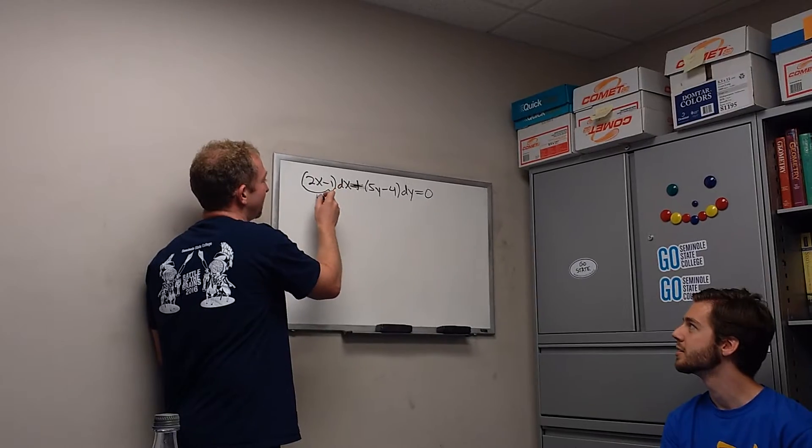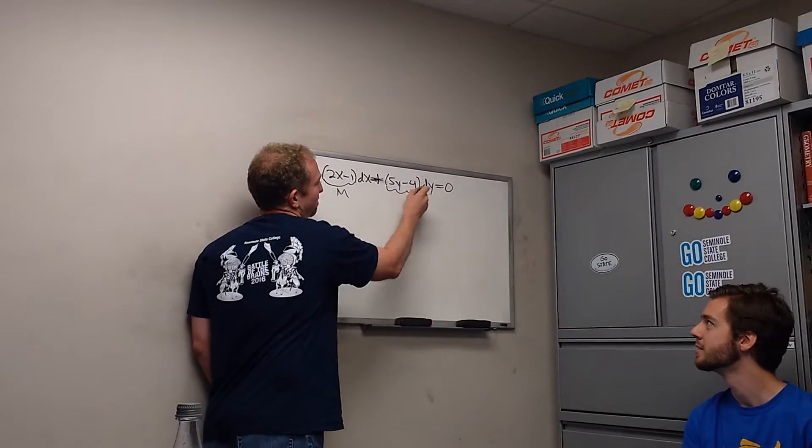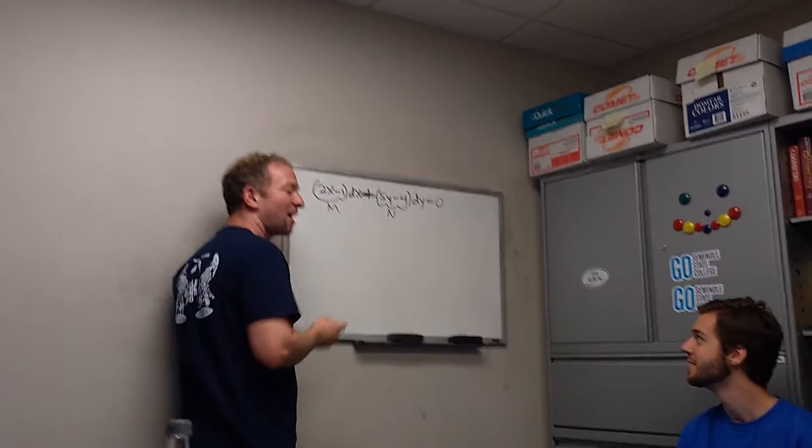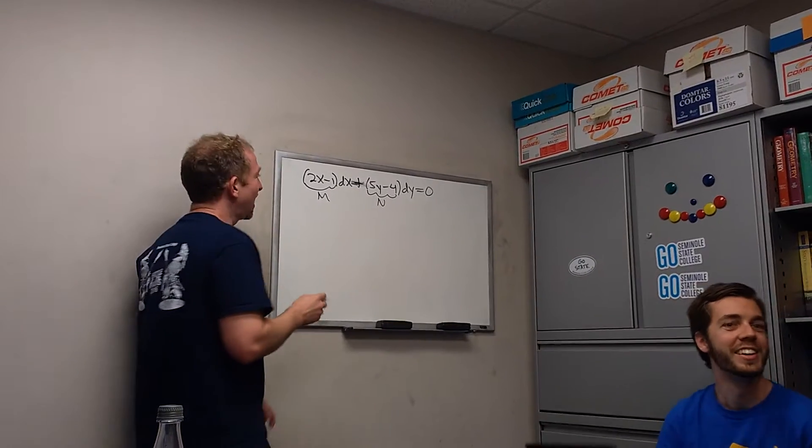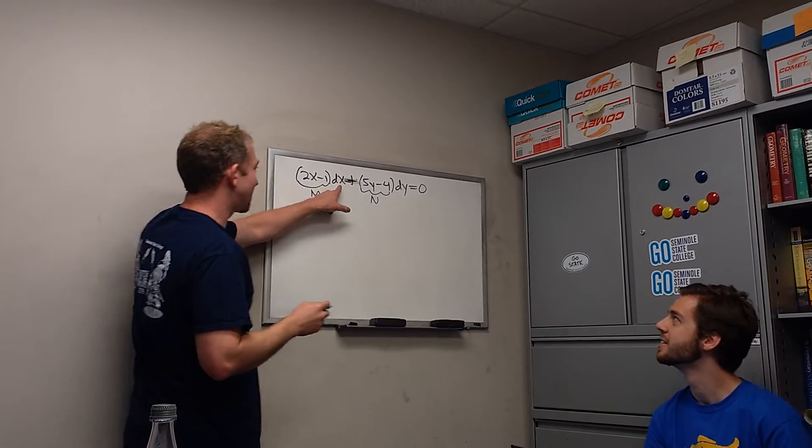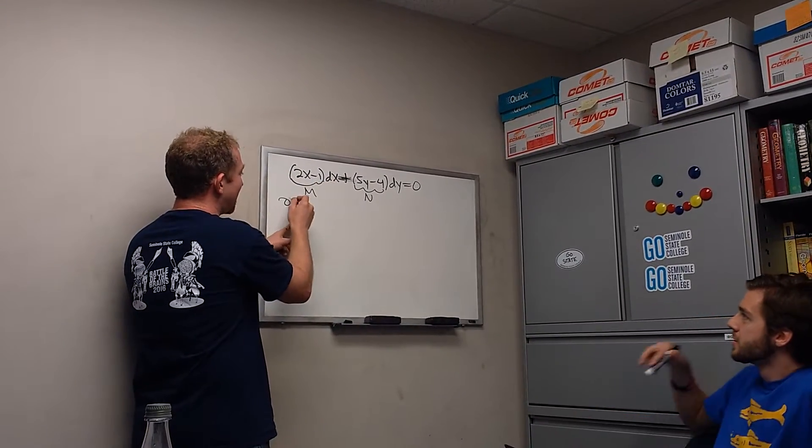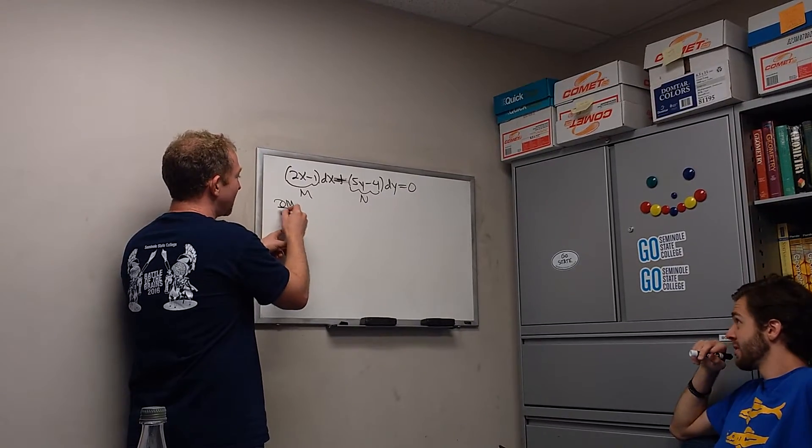you call this big M. Big M? Yeah, and you call this big N. M and N? Oh, you're going to love those. Okay, and here's the trick. There's a dx here, so you have to compute del M del y. Partial derivative.